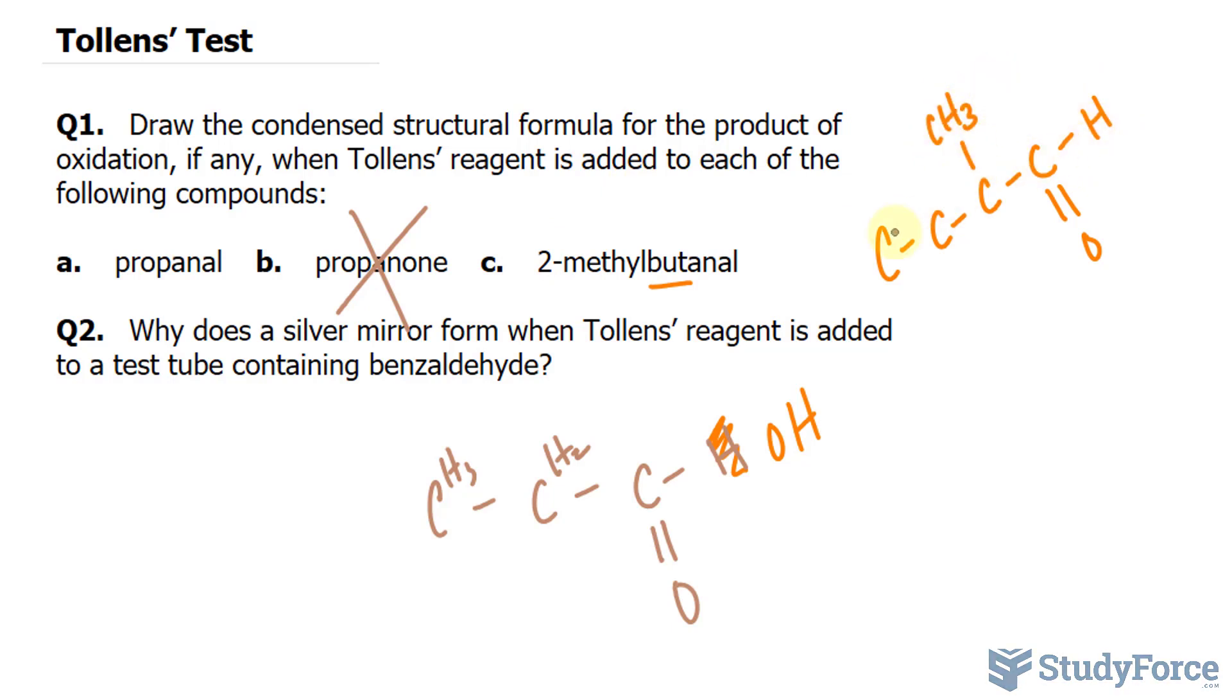We're expecting a carboxylic acid, so this H will be replaced with OH, and that's it. The next question: why does a silver mirror form when Tollens' reagent is added to a test tube containing benzaldehyde?